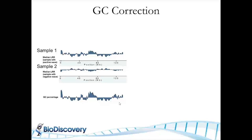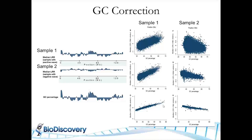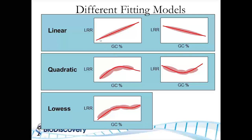What people did back then was look at the GC percentage across chromosome 11 as an example. If you look at sample one, there's a very nice direct correlation: when you have more GC in a region, you get a higher log ratio value, and if you have less GC, you get a lower log ratio value. For sample two, it's actually the reverse. If you plot that out, you can see it's a nice linear relationship. Once you understand that this is what's causing the variation, then you can do a systematic correction to make it nice and flat.